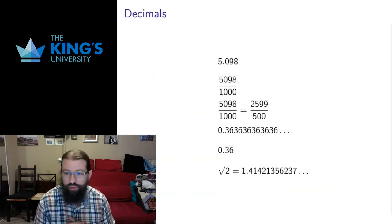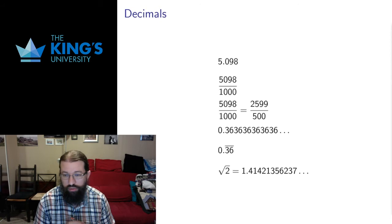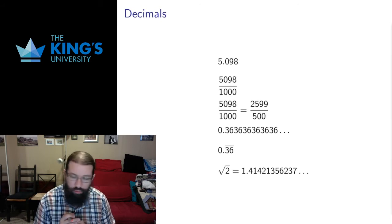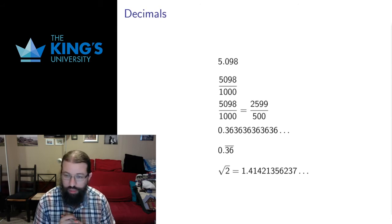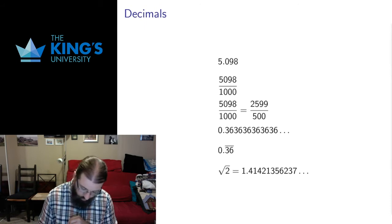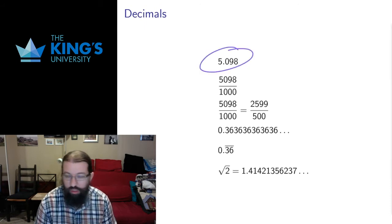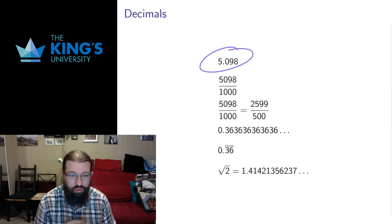So let's start with decimals and fractions. We can express most fractions as decimals, we can express most decimals as fractions, we can go back and forth between them. So let me start here with this decimal 5.098. And what decimals mean are fractions over powers of 10, hence the term decimal, which comes from the Latin root dec for 10.